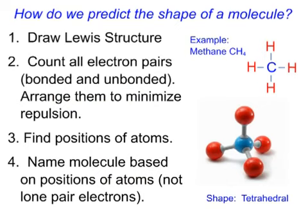So how do we predict the shape of any given molecule? Here are some rules that will help us to do that with our VSEPR theory. Number one, we draw the Lewis structure. So here's an example. I picked methane. It's a fairly simple molecule. Here's the Lewis structure of methane. And then step two, we count all the electron pairs, bonded and unbonded, and we arrange them to minimize repulsion. So in this case, we only have bonded pairs. They're one, two, three, and four.